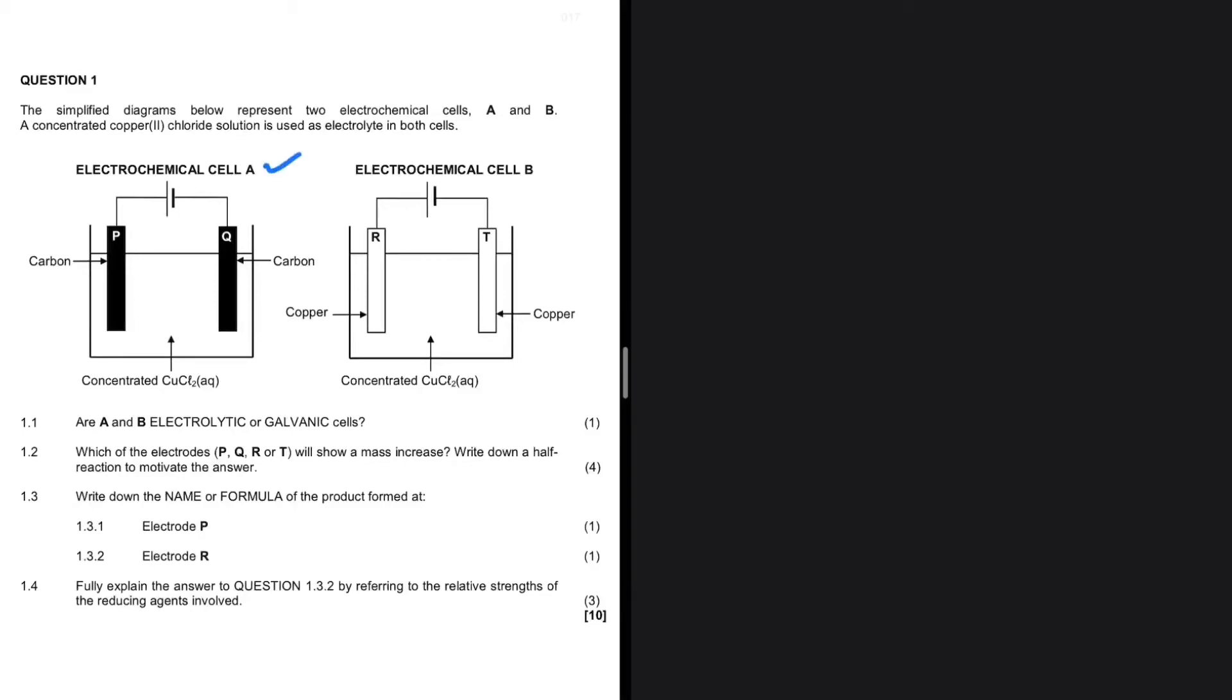In electrochemical cell A, we have carbon as the electrode, while in electrochemical cell B, we have copper as the electrode.